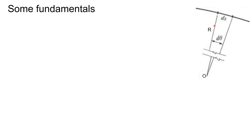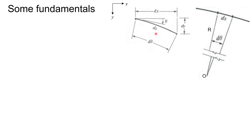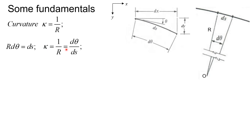Let us look at some fundamentals about curvature. Consider a curve with radius r and center at O. Since r is large, it is shown using broken lines. The arc length ds subtends an angle dθ at the center. Curvature of a curve is defined as 1/r. From r·dθ = ds, we get curvature = dθ/ds.